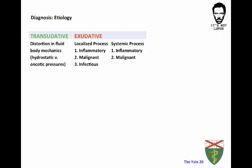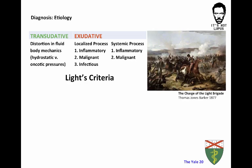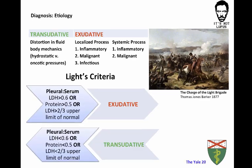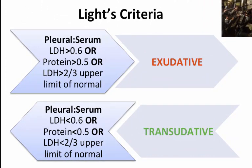Transudative processes cause fluid to leak due to distortions in body mechanics, while exudative processes are generally inflammatory, infectious, or malignant in nature. To evaluate these, we use Light's criteria. Dr. Light spent part of his fellowship performing thoracenteses to identify patterns distinguishing exudative from transudative processes. If pleural fluid LDH-to-serum ratio is greater than 0.6, protein ratio greater than 0.5, or LDH is two-thirds the upper limit of normal, it's exudative. All three must be negative to declare it transudative.